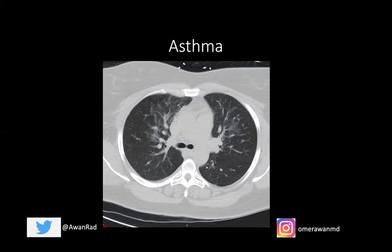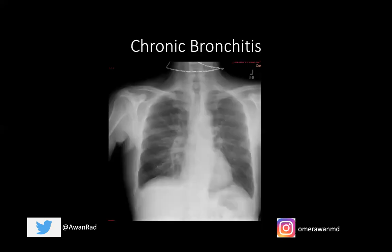The FEV to FVC ratio will always be decreased in all obstructive lung diseases. FEV, or forced expiratory volume, measures how much air a person can exhale during a forced breath, typically measured at one, two, and three seconds. FVC, or forced vital capacity, is the total amount of air exhaled during an FEV test. The FEV1 over FVC will always be decreased in obstructive lung disease because of air trapping — you can't fully exhale. This applies to asthma, chronic bronchitis, emphysema, and bronchiectasis.